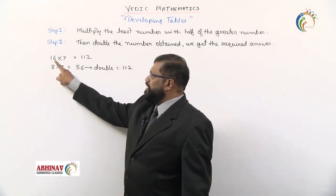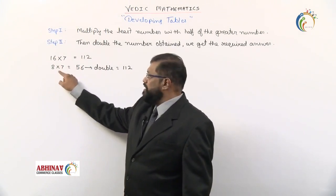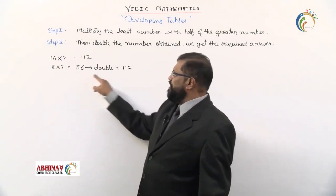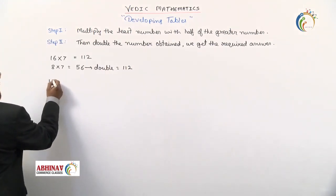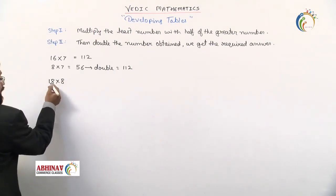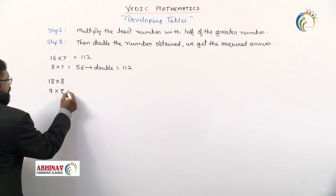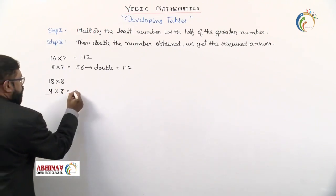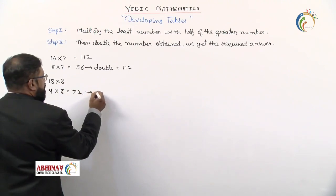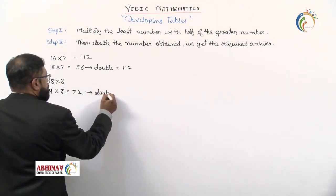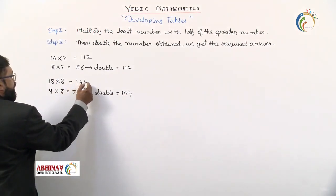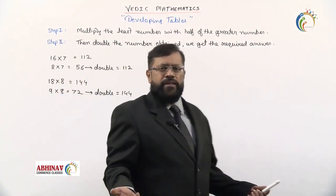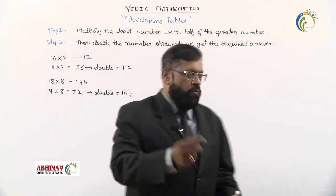See once again. 16, 7, the greater number 16, we take half of that, it becomes 8 into the least number 7. 56, double it, we get the answer. We'll take up one more example. 18 into 8. 18 is the greater number, so we half it, it becomes 9 into the least number, 9 into 8, what we get is 72. This 72 we double. When you double, what we get? 72 double is 144. So 18 into 8 is 144. See how simple the things are.